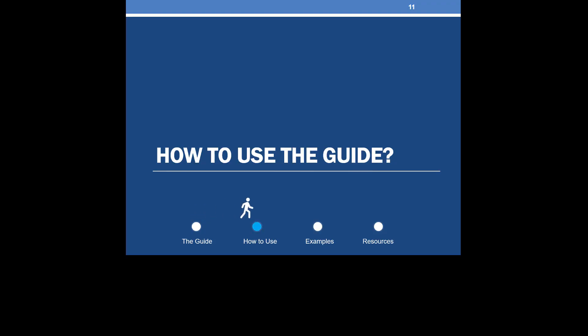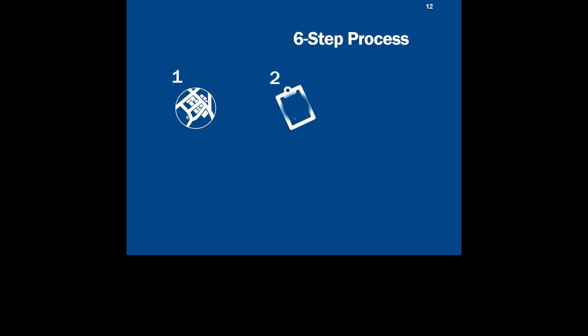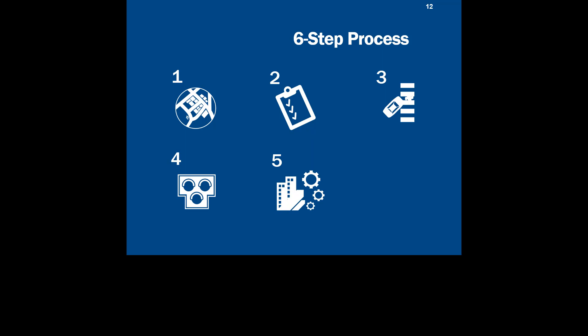This section describes how to use the guide to select appropriate countermeasures for uncontrolled pedestrian crossing locations. The guide provides a six-step process: Step 1, collect data and engage the public; Step 2, inventory conditions and prioritize locations; Step 3, analyze crash types and safety issues; Step 4, select countermeasures; Step 5, consult design installations and resources; Step 6, identify opportunities and monitor outcomes. This video provides a brief overview of each step and then focuses on Step 4, select countermeasures.